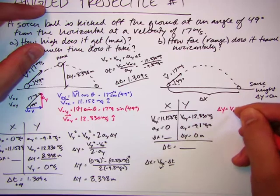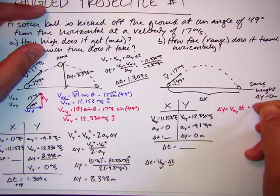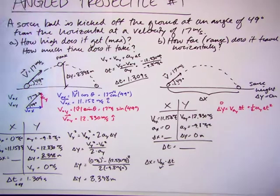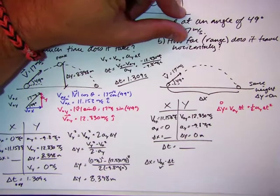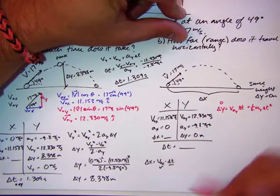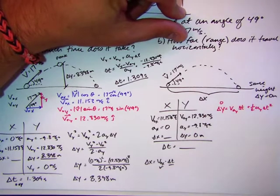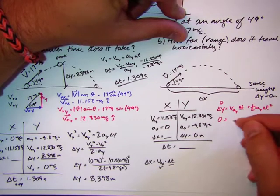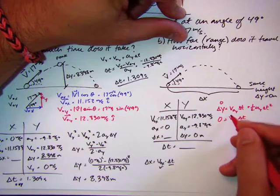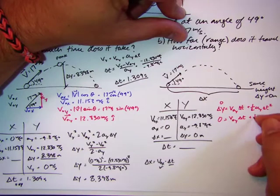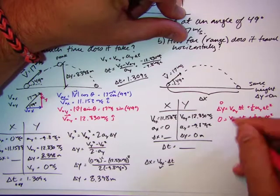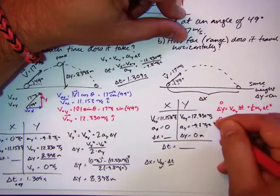So delta y is v not y delta t plus 1 half ay delta t squared. And because this is zero, it becomes a more simple equation to solve. I don't have to use the quadratic formula because one of my t's will cancel out. So zero equals v not delta t. Let's just factor out the delta t. Delta t squared. So I take out a delta t because that will equal to zero.